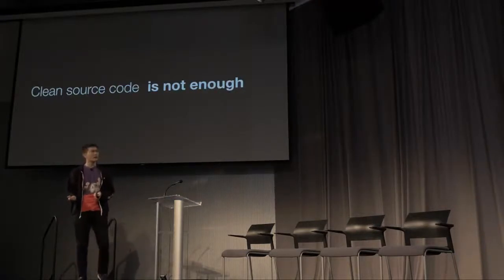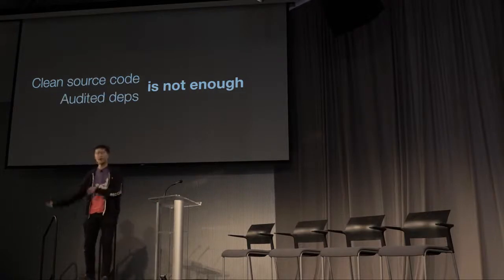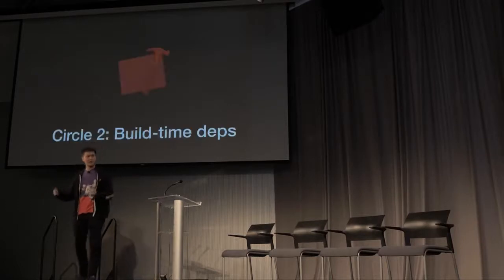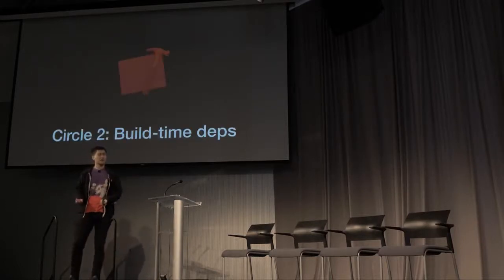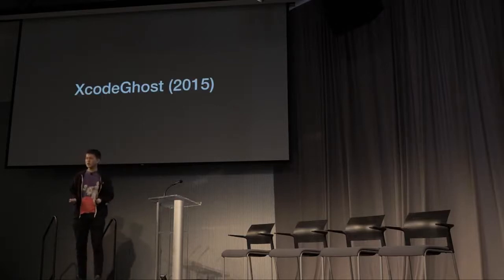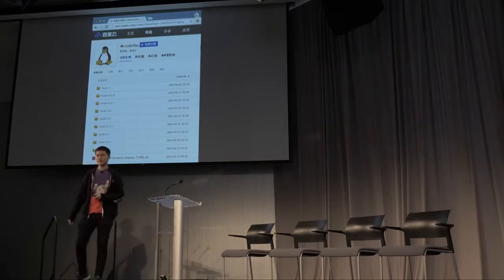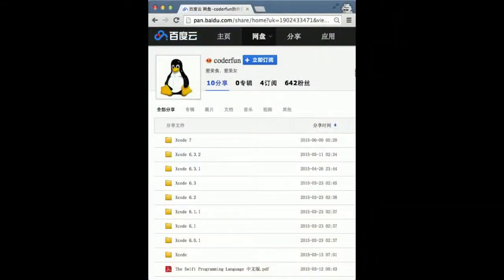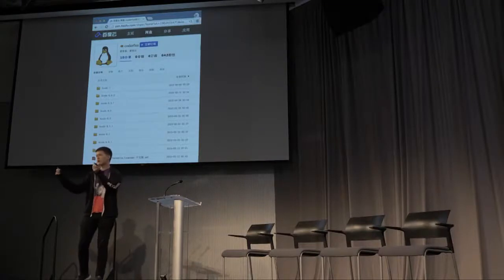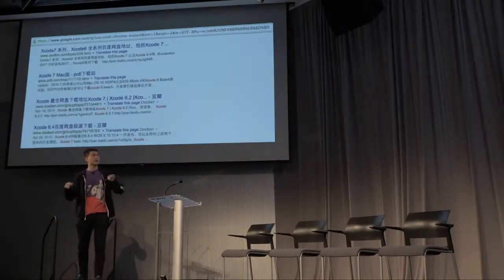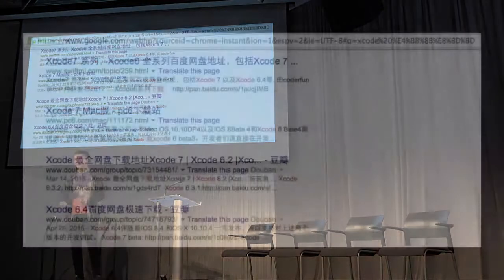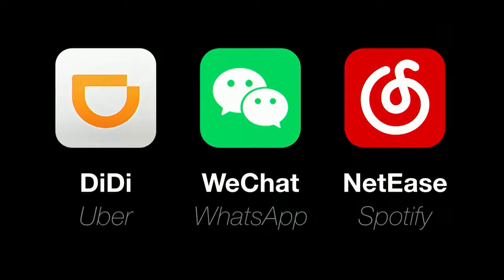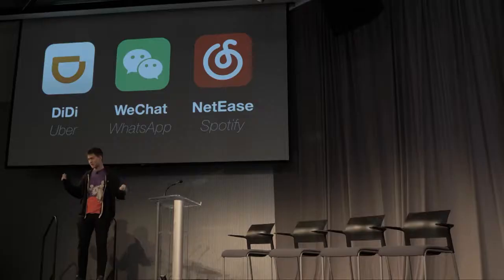So we talked about how clean source code is not enough, and auditing dependencies is not enough. Let's go to the second circle of hell: build-time dependencies. I'd like to illustrate this with an incident in 2015 called Xcode Ghost. Basically what happened is there's a hacker called CoderFund who uploaded versions of Xcode to Baidu — basically China's version of Dropbox. Because the App Store is super flaky in China, people usually just search "Xcode download" and download the first thing they find. He was able to do some SEO optimization to get his link to be the first link, and people downloaded it and compiled their applications. He was able to infect some of the largest apps in China — DD, WeChat, and NetEase.